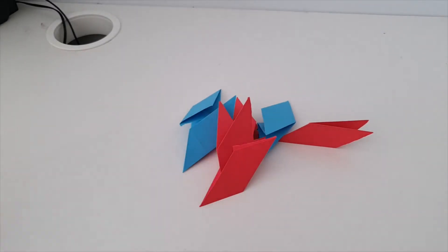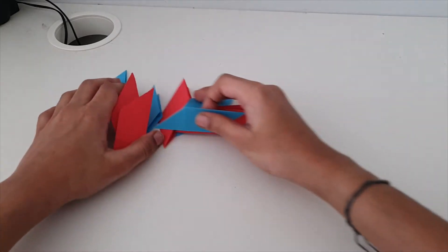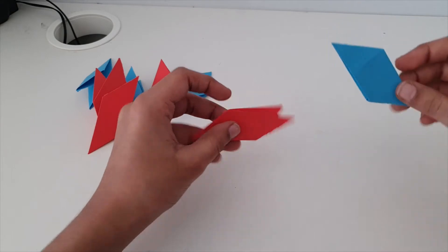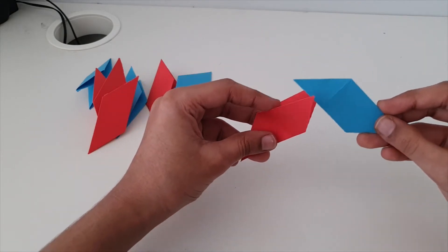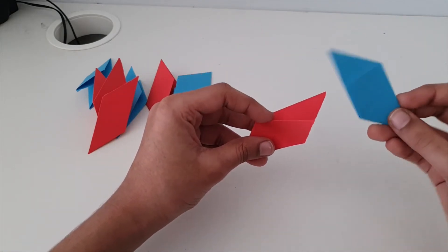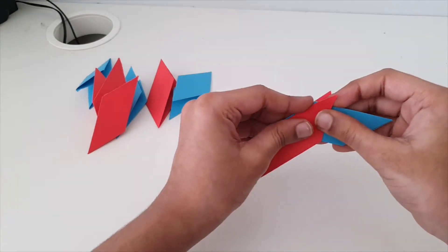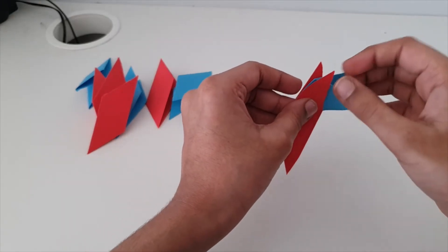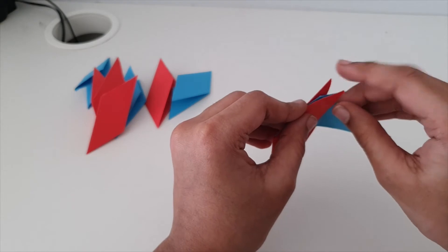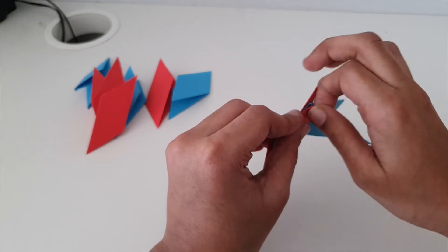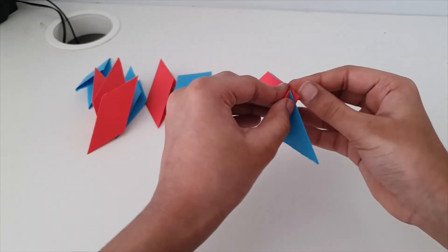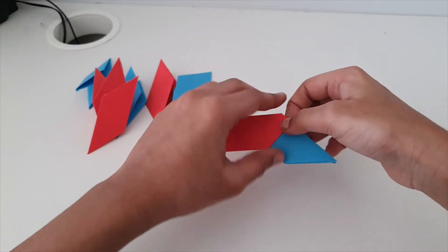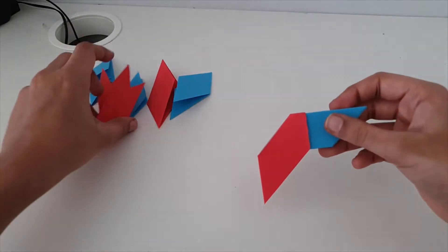We need 8 of these. Like this. So take 2. Hold one like this and the other one like this. Open the flap inside and tuck this inside over here. And now open this flap and tuck these inside. And now we have to do the same thing.